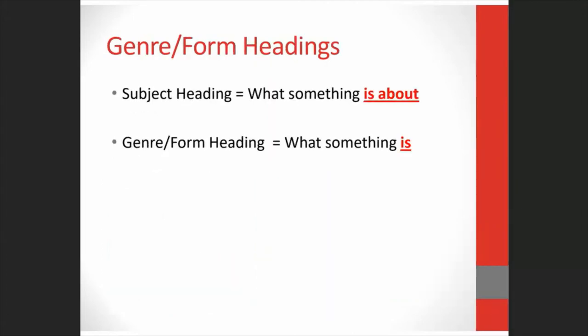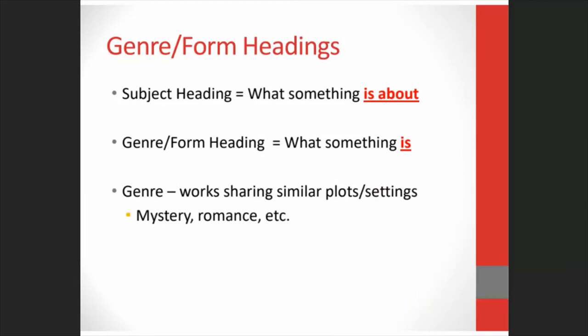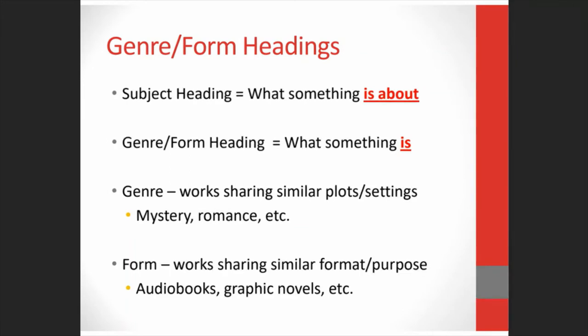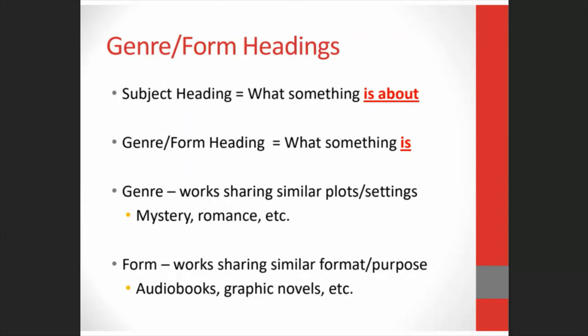Subject headings describe what an item is about, but there's also a way to describe what the item actually is — and these terms are genre and form headings. Genre terms are used for works that share similar plots, settings, or themes. So books where someone's trying to solve a crime are mysteries; books where two people fall in love are romances. Mystery fiction or romance fiction are genre headings. Form headings are used for works that share a particular format or purpose — examples would be audiobooks or graphic novels. The main one you'll run into now is the LCGFT, or the Library of Congress Genre Form Terms list, which is maintained by the Library of Congress and updated on a regular basis.